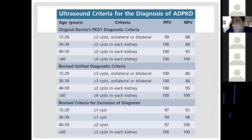Regarding diagnosis of ADPKD, the revised unified diagnostic criteria state: for patients aged 15–29 years, more than three cysts unilateral or bilateral are required; for ages 30–39, the same criterion applies; for ages 40–59, more than two cysts in each kidney; and for patients over 60 years, more than four cysts in each kidney.